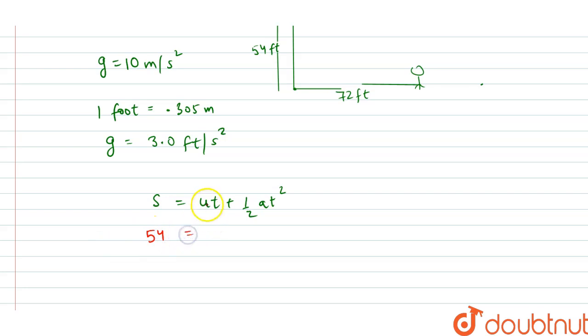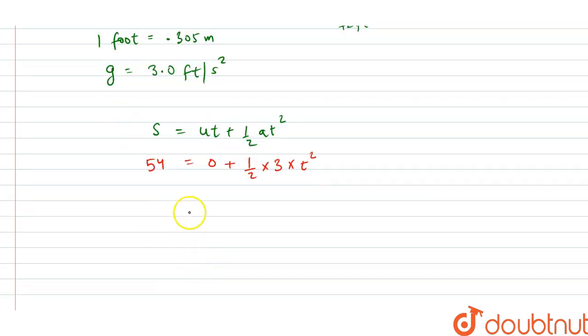54, is equal to - initially the velocity of the packet is 0, so this is 0 plus (1/2) times a is 3 times t². So from here,